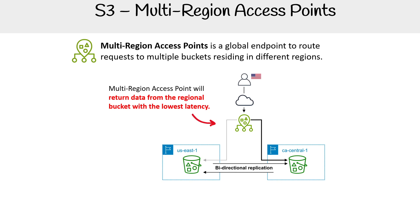We have a customer from the US, but to make this diagram work — I made a mistake, I shouldn't have called it US East One, I should have called it some other place. Let's just pretend this person lives on the border of Canada, and the town across is Montreal. It would make more sense to route them to CA Central, which is in Montreal, than to US East One, which is in North Virginia. So that's what this can facilitate.